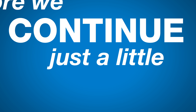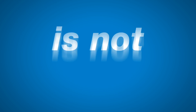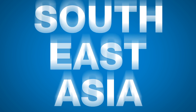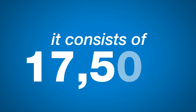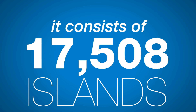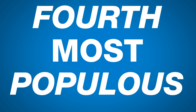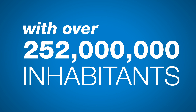But before we continue, just a little geography refresher. Indonesia is not simply a group of larger islands in Southeast Asia between China and Australia. It consists of 17,508 islands to be precise, 6,000 of which are lived on. In fact, Indonesia is the world's fourth most populous country with over 252 million inhabitants.